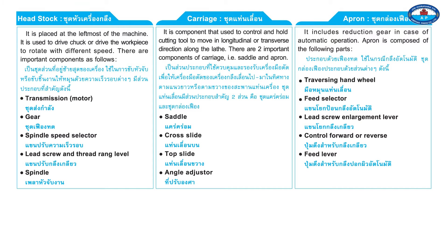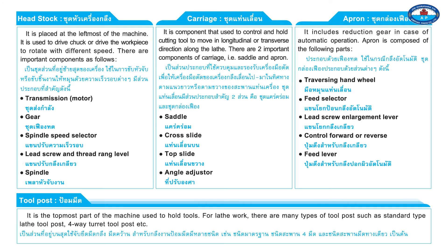The saddle includes the cross slide, top slide, and angle adjuster. The apron includes a reduction gear for automatic operation and is composed of the following parts: traversing handwheel, feed selector, lead screw enlargement lever, and control forward or reverse feed lever.